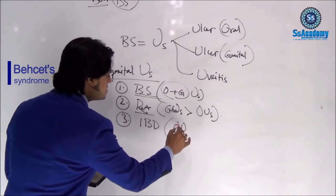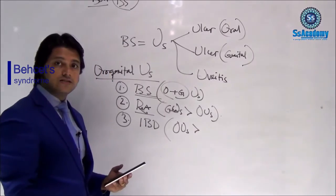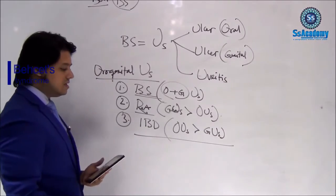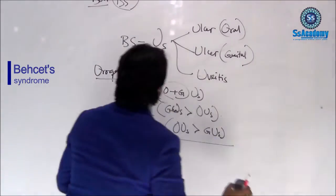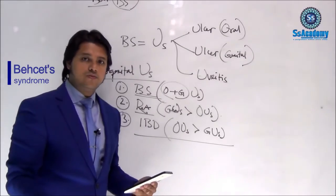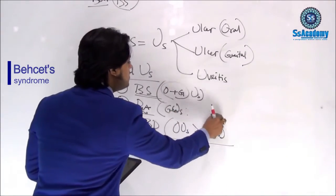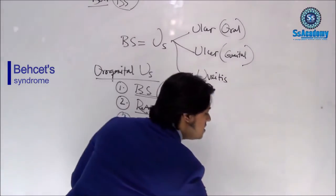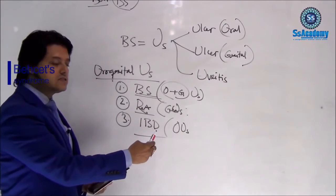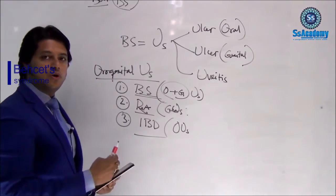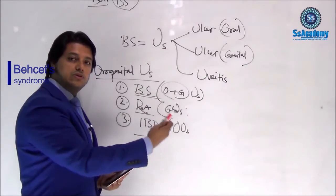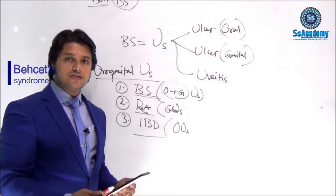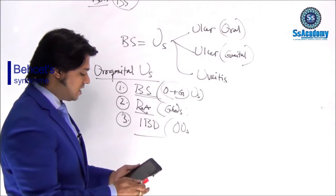For IBD, the oral ulcer is more prominent rather than the genital ulcer. To summarize: both oral and genital ulcers point to Behçet's syndrome; genital ulcer predominance points to reactive arthritis; and oral ulcers as the likely presentation point to IBD — inflammatory bowel disease.